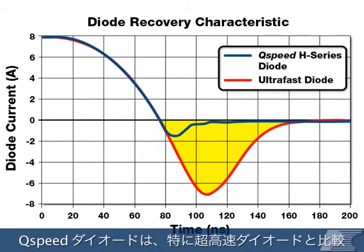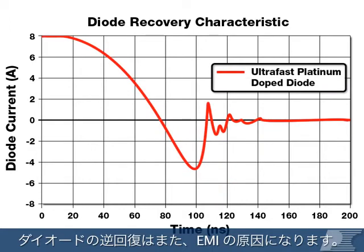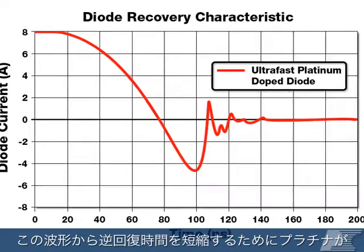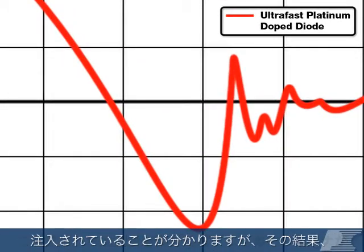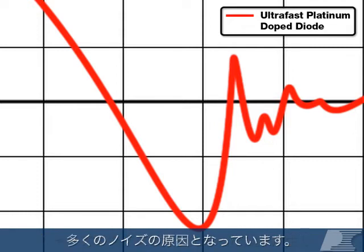Q-Speed Diodes have very low QRR, especially when compared against ultra-fast diodes. The reverse recovery of a diode also causes EMI. In this waveform, you can see that platinum doping, used to reduce reverse recovery time, has led to a very snappy waveform with sharp edges that generate a lot of noise.